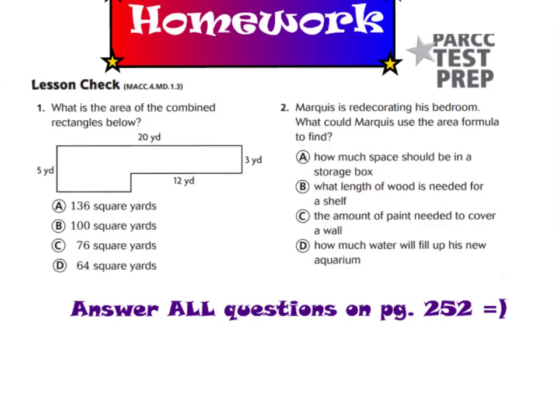Here are our homework questions. Number 1 says what is the area of the combined rectangles below? It's your job to separate this larger combined area into two separate rectangles. Make your line going vertically or horizontally. But remember you don't know the value of these parts yet. Use your algebra skills to figure that out. Then find your combined area. Number 2: Marquise is redecorating his bedroom. What could Marquise use the area formula to find? A. How much space should be in his storage box. B. What length of wood is needed for a shelf. C. The amount of paint needed to cover a wall. Or D. How much water will fill up his new aquarium.